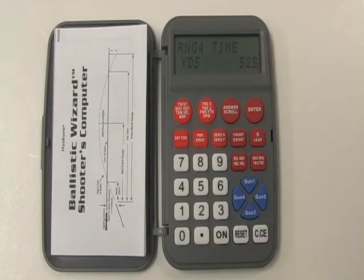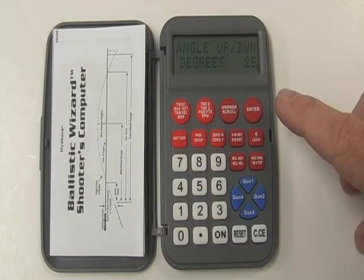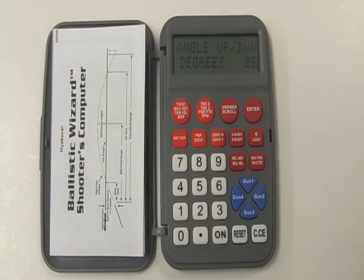Next, we have range for time. This is the distance that needs to be input for calculating the bullet's elapsed time from muzzle to target. Next, we have angle up/down in degrees. This must be entered for developing shooting uphill and downhill solutions.